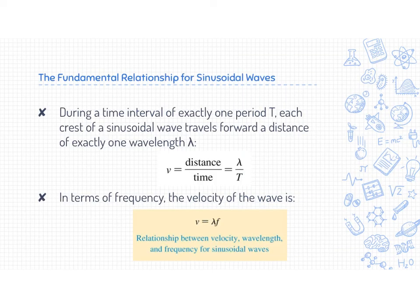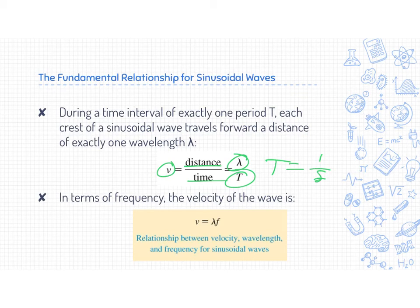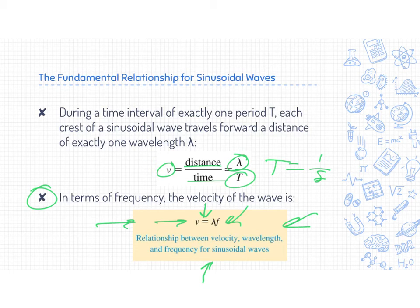We know that velocity is distance over time. The distance a wave travels in one cycle is the wavelength, and the time is the period. The period is one over the frequency. So in terms of frequency we get the equation: velocity equals frequency times wavelength. This is known as the fundamental wave equation. Although it's so simple — coming straight from velocity equals distance over time — this equation explains so much about waves. It's incredibly important, easy to memorize, and helps us explain so many phenomena.